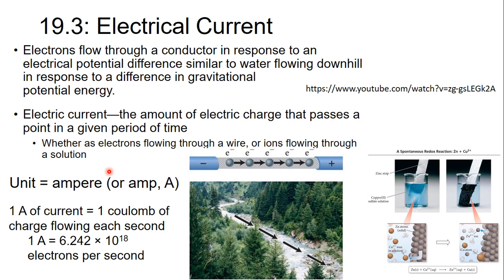That's our unit, and 1 amp is 1 coulomb of charge each second, or it's 6.242 times 10 to the 18 electrons flowing per second.